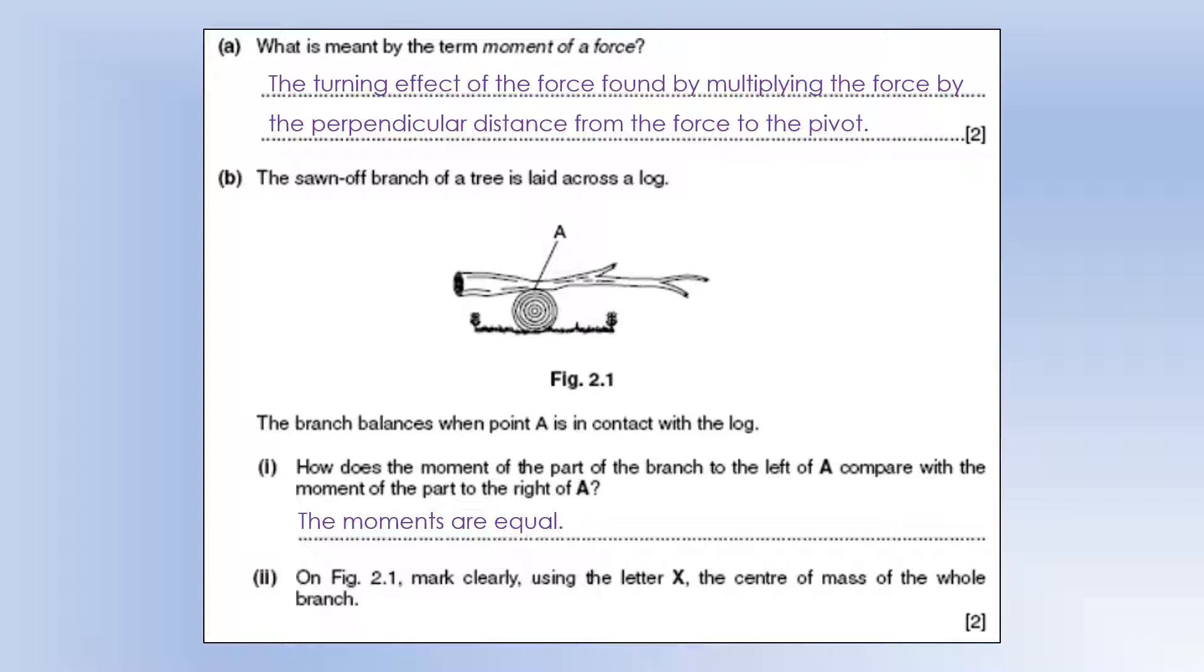Mark clearly using letter X the center of mass of the whole branch. Well, if it's balanced, the center of mass must be at A, so the weight force acts straight through the pivot and it doesn't have an overall moment.